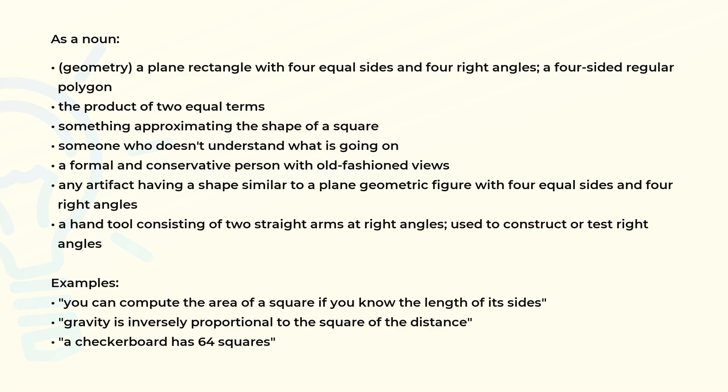Examples of use: you can compute the area of a square if you know the length of its sides, gravity is inversely proportional to the square of the distance, a checkerboard has 64 squares.